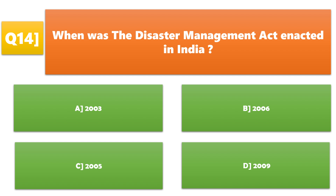When was the Disaster Management Act enacted in India? A. 2003, B. 2006, C. 2005, D. 2009. C. 2005 is the correct answer.